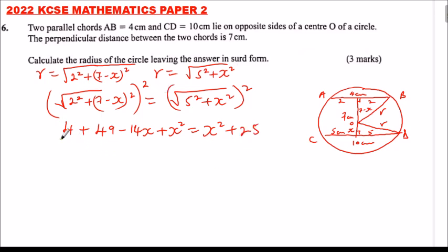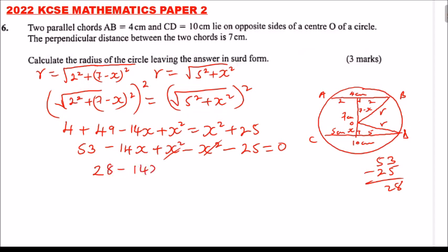We bring everything to one side. 4 plus 49 gives us 53 minus 14x plus x squared minus x squared minus 25 equals 0. x squared minus x squared is 0. 53 minus 25 gives us 28. So we have 28 minus 14x equals 0.